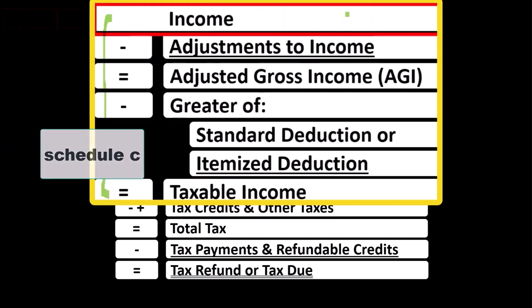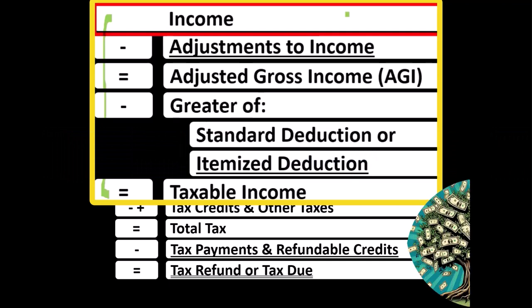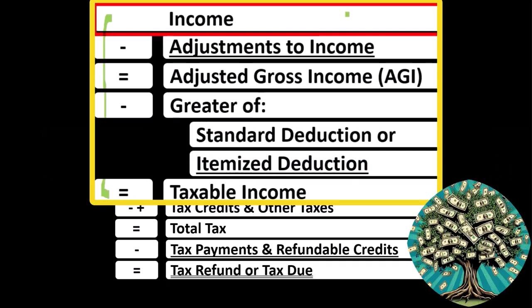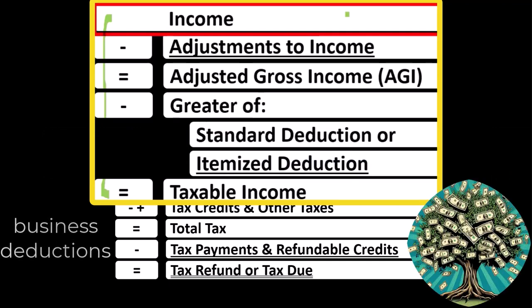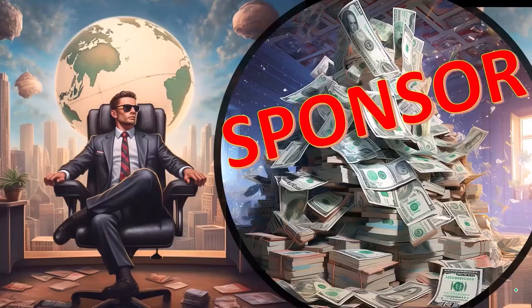The Schedule C itself is basically an income statement, having business income minus business expenses — which could also be called business deductions — resulting in, in essence, net business income, which is what rolls from the Schedule C to line one income of the formula.